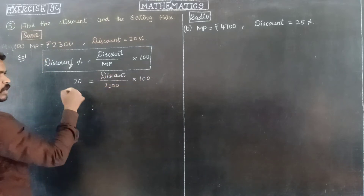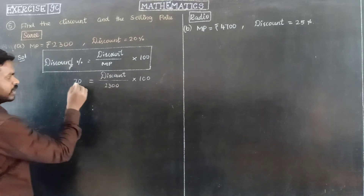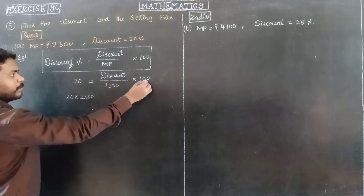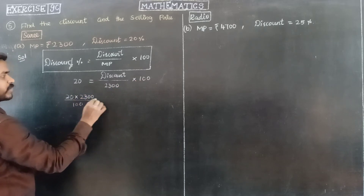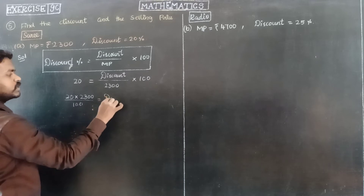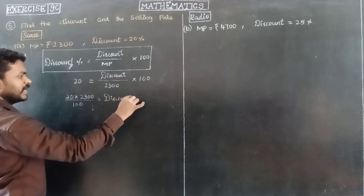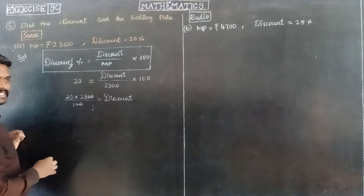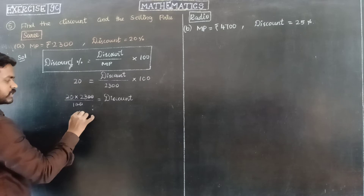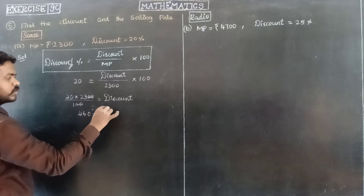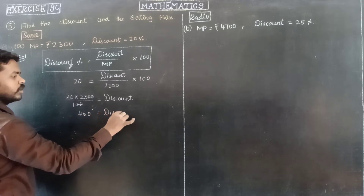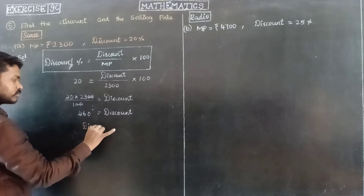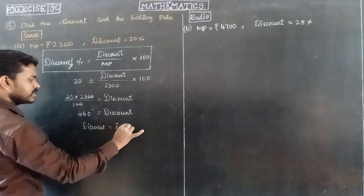So, rearranging — discount equals 20 into 2300, divided by 100. So discount is equal to ₹460.